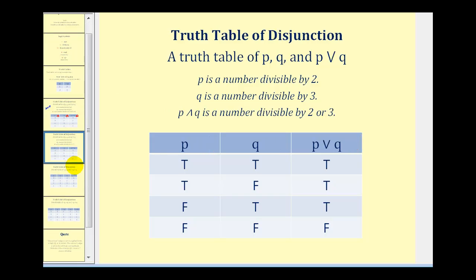Now let's look at the truth table for disjunction. The setup is similar, but the third column is P OR Q. For P OR Q to be true, it only takes either P or Q to be true. So the only time P OR Q is false is when both P and Q are false. If they're both true, it's true; if P is true, it's true; and if Q is true, it's true.